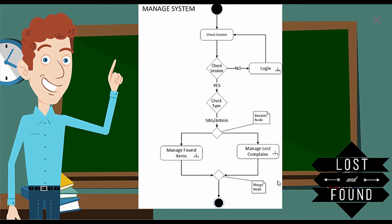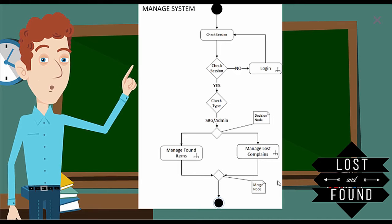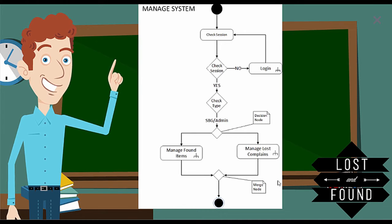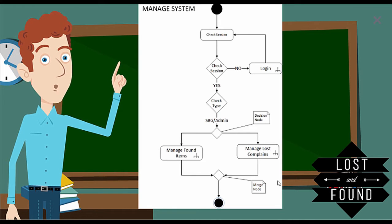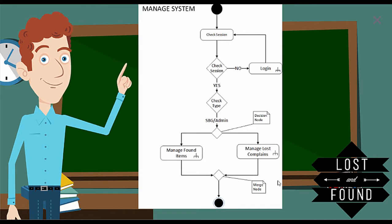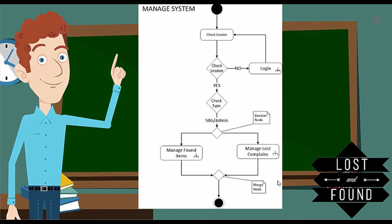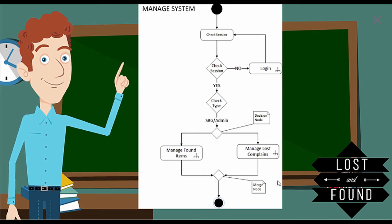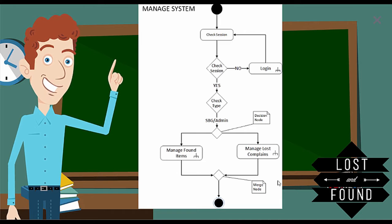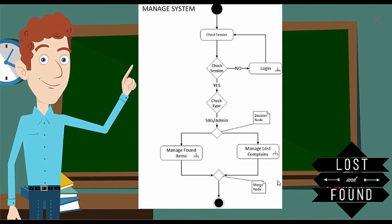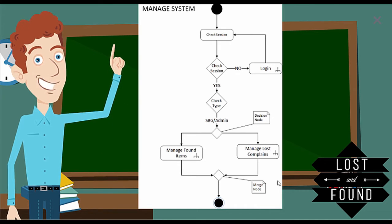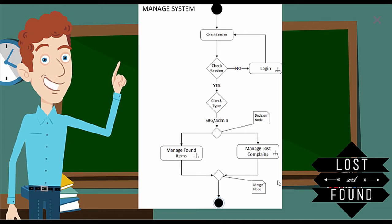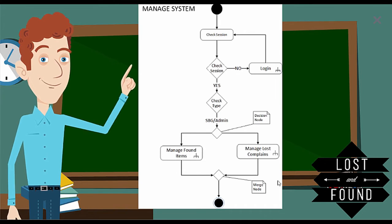There is a sub-activity symbol showing an expansion of the login activity. If the user is already logged in, a decision node checks the type of user. If the user type is SBG or admin, a decision box divides the flow into two paths: manage found item activity and manage lost complaint activity, each with a sub-activity symbol showing their expansion. In these two activities, basic CRUD operations — add, update, delete — are present. A merge node then combines the two flows, and a final node indicates the end of the manage system activity.